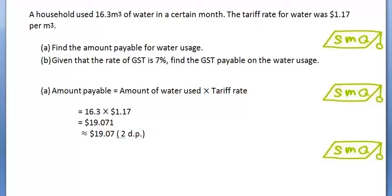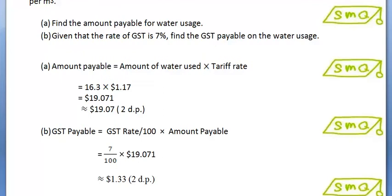Our answer for part A would be $19.07 converted to 2 decimal places. To calculate the GST payable, we use the formula here. And the final answer would be $1.33 converted to 2 decimal places.